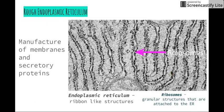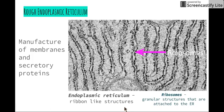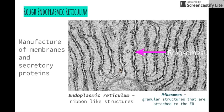Next we have the rough endoplasmic reticulum. You'll recall that there are two different types of endoplasmic reticulum: the rough and the smooth. The endoplasmic reticulum consists of ribbon-like structures throughout the cell. The difference between rough and smooth is that the rough endoplasmic reticulum has ribosomes — little spots found on the ribbon-like structures. It is the ribosome's job to manufacture membranes and secretory proteins.